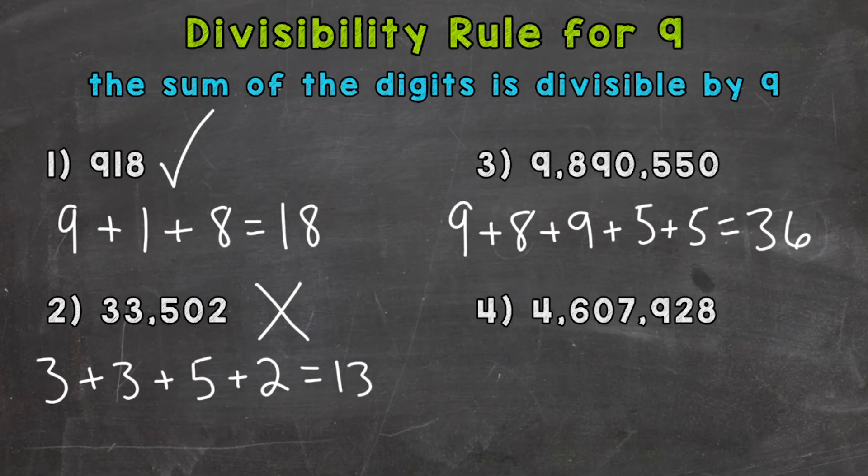So 9 plus 8 is 17 plus 9 is 26 plus 5 is 31 plus 5 is 36. 36 divided by 9 is 4 without a remainder. So 36 is divisible by 9. Therefore, 9,890,550 is divisible by 9 as well.